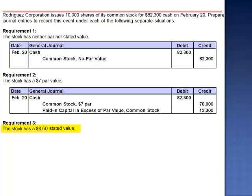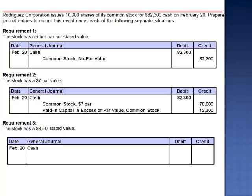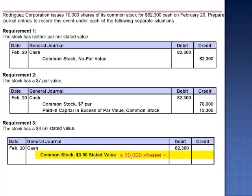Requirement 3. The stock has a $3.50 stated value. Assets increase $82,300 and equity increases by $82,300. The stated value of 10,000 shares is credited to the common stock $3.50 stated value account — 10,000 shares multiplied by $3.50 per share equals $35,000. And the difference is credited to paid-in capital in excess of stated value on common stock.